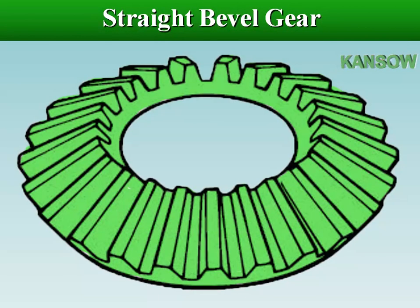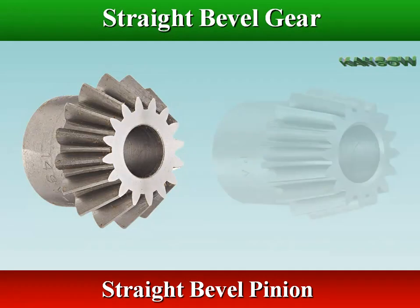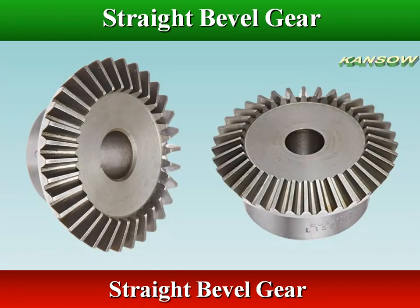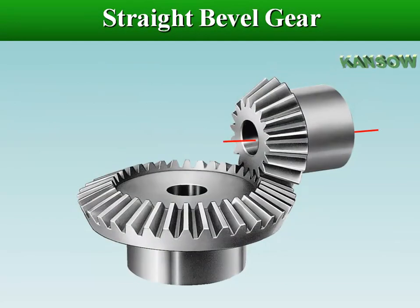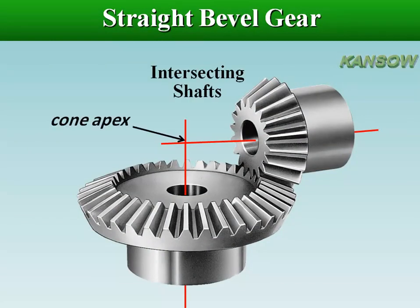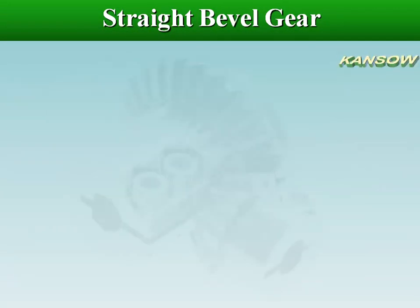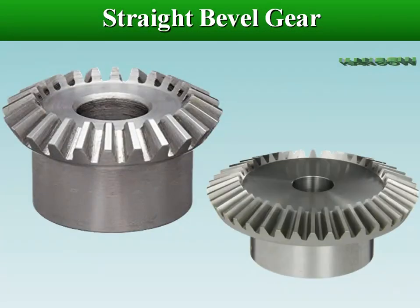Straight bevel gears are commonly used on shafts that intersect at right angles. The gear teeth are straight but their sides are tapered so that they would intersect the axis at a common point, called the cone apex, if extended inward. The meshing gears have line contact, hence they are not smooth in operation and generate more vibrations and noise at high speed.